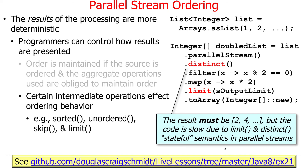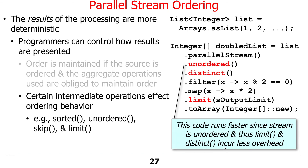However, if we don't have an ordered source, or if we explicitly call unordered() on the stream, then this code will run faster. Everything else is the same, but saying unordered means it doesn't have to do as much work to keep track of what's going on. So this will actually run a lot faster — try running the test and you'll see it's much faster when you do that.